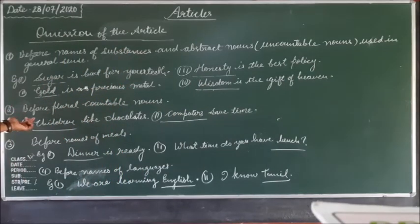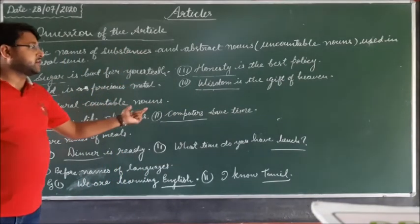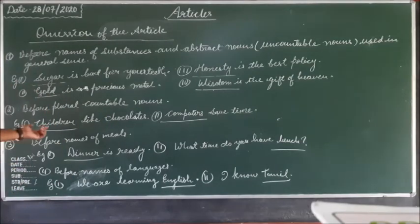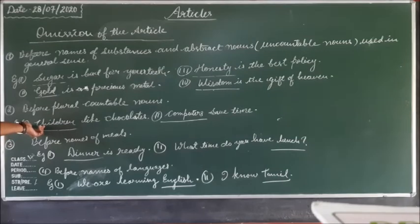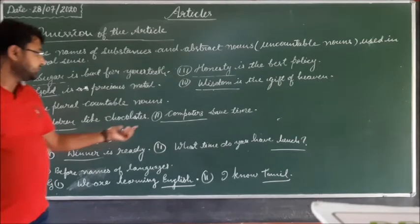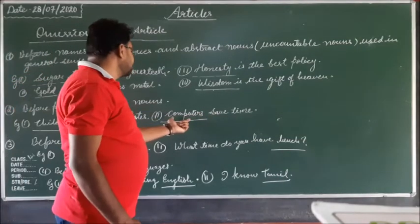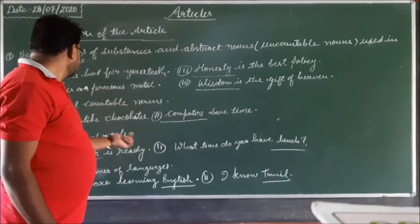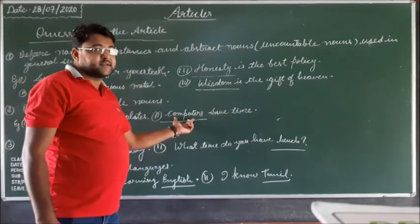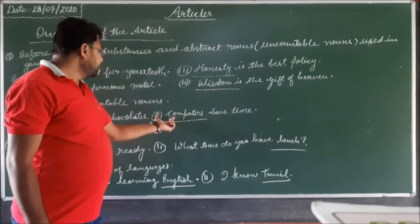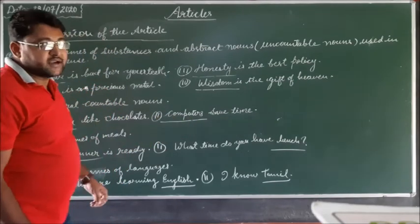The second case of omission is before plural countable nouns. For example: 'Children are playing' — 'children' is plural and countable, so before it we never use an article. Similarly, 'Computers save time' — 'computers' is a plural countable noun, so no article is used before it.